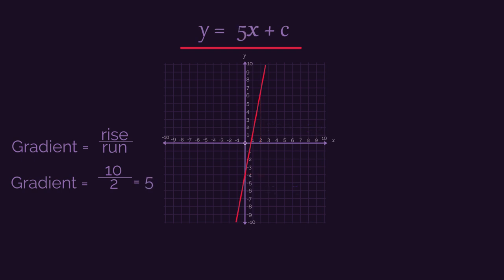And then the line crosses the y-axis at negative 4. So our equation is y equals 5x minus 4.